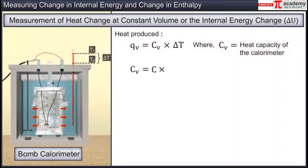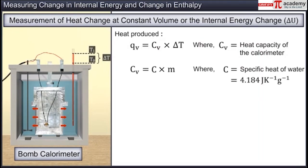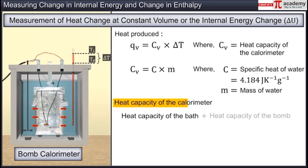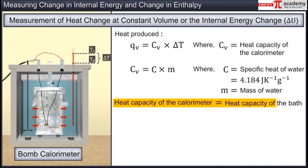CV = C × M, where C is the specific heat of water equal to 4.184 J per Kelvin per gram, and M is the mass of water. The heat capacity of the calorimeter is the sum of the heat capacity of the bath (water) and the heat capacity of the bomb (metal). Since water has a much higher heat capacity than the metal, the heat capacity of the metal is neglected, and the heat capacity of the calorimeter is taken as the heat capacity of the bath only.